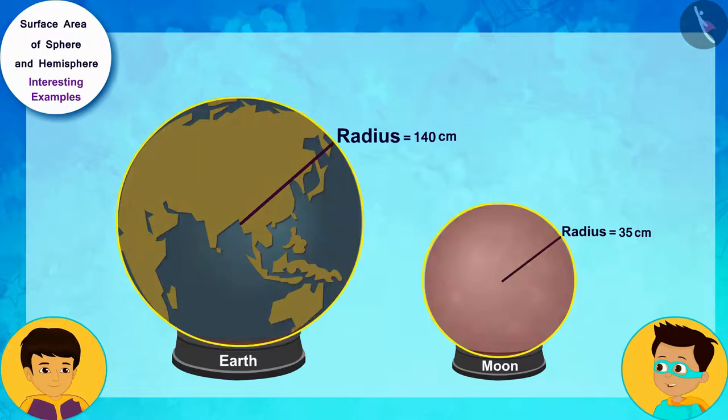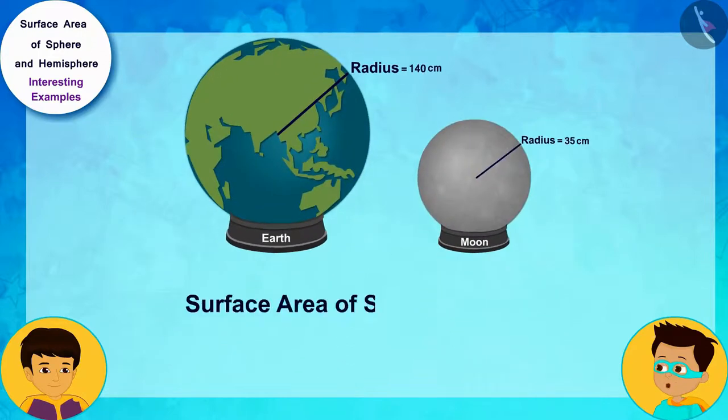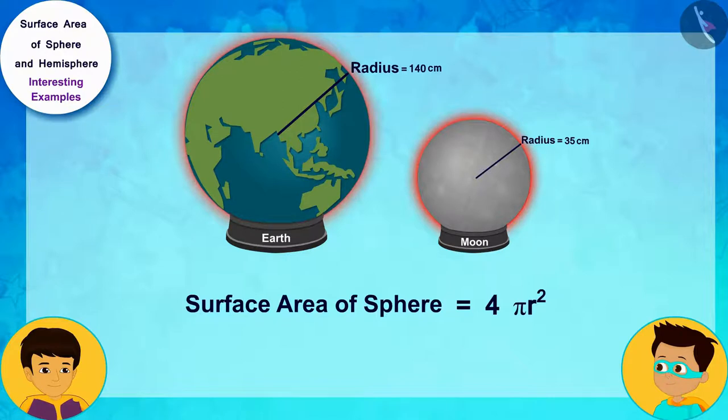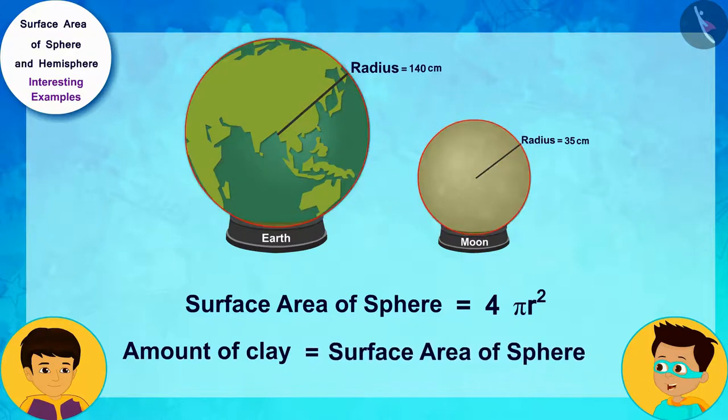I remember the formula for the surface area of sphere. The surface area of sphere is 4 times pi r square, where r is the radius of sphere. And because both of these models are hollow spheres, the amount of clay used to make them will be equal to their surface areas.